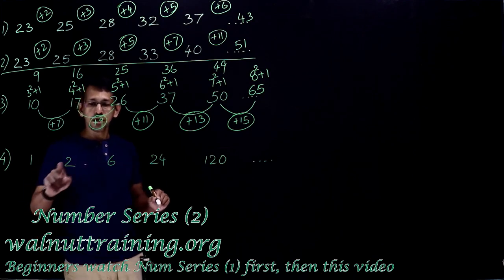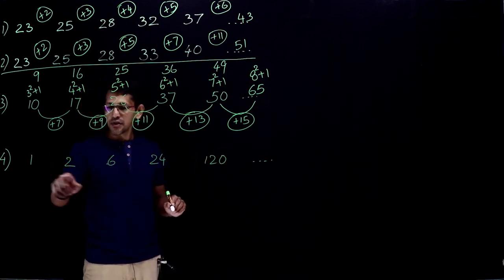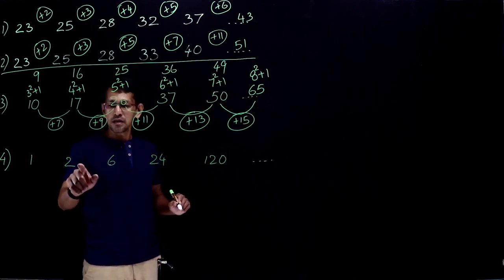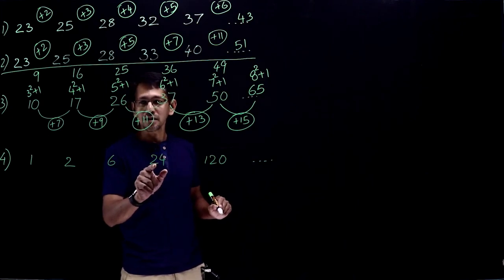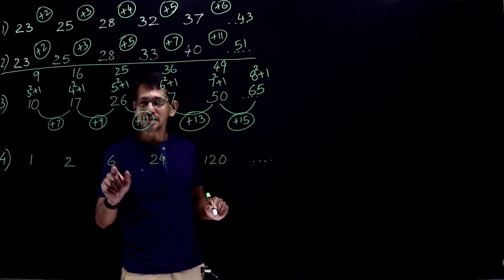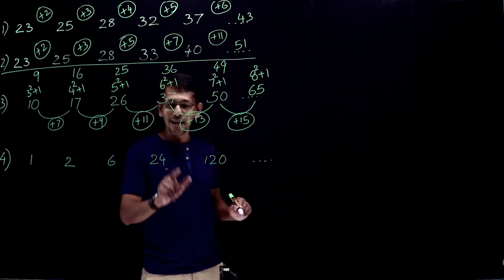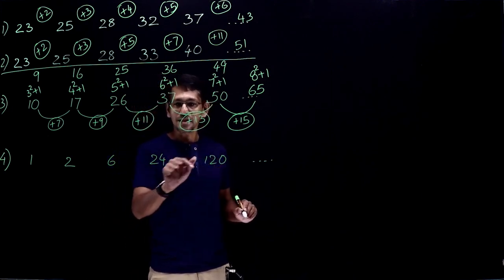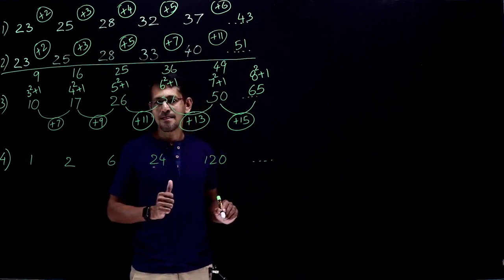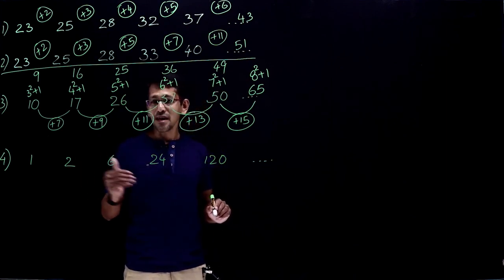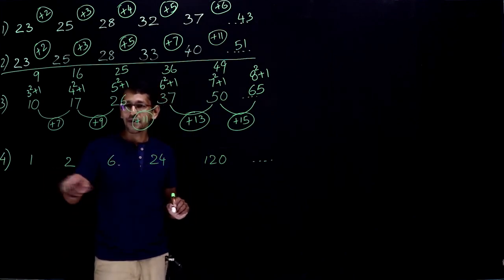See that? 1, 2, 6, 24, 120. When you look at differences plus 1, the difference is plus 4. This difference is plus 18, and this difference is plus 96. However, does it make any sense? Do we have any other method or any other pattern right here, rather than finding the differences?